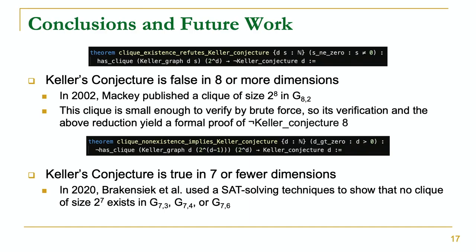For future work, there's still the other direction to tackle. There's been a more recent development in 2020, where Brick and Seek et al. used SAT solving techniques and symmetry-breaking techniques to show that no clique of size 2^7 exists in the relevant Keller graph. If we can formally verify the arguments they use there, we can plug that into the second result to show that Keller's conjecture is true in seven dimensions. That's something I'd like to do in the future.